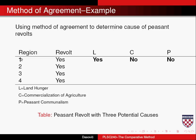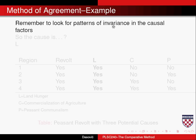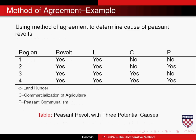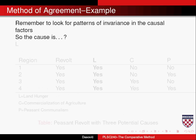We have potential causes of revolt: the first is land hunger, the second is the commercialization of agriculture, and the third is peasant communalism. Using either secondary or primary research, we determine whether these existed or did not in each region. For region one, yes, there was land hunger, and no, there wasn't commercialization of agriculture, neither was there peasant communalism. We do that for regions two, three, and four as well, and end up with a table. The method of agreement is looking for patterns of invariance in the causal factors — the independent variables — while revolt is the dependent variable.